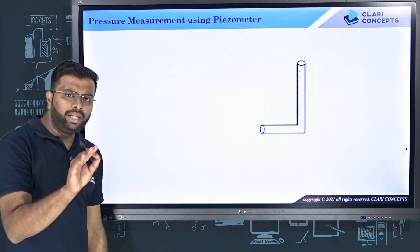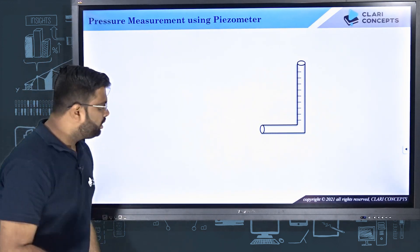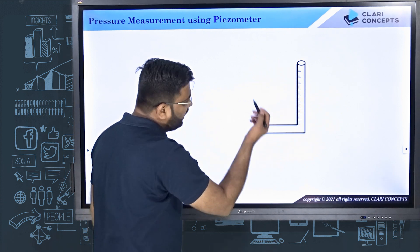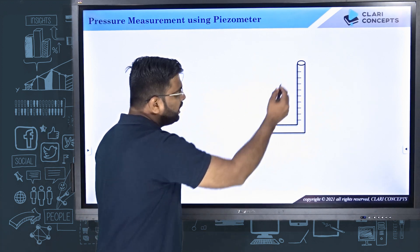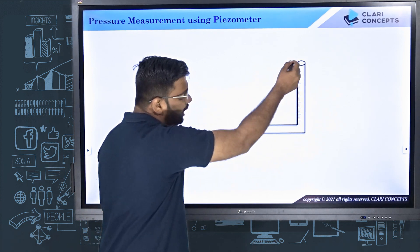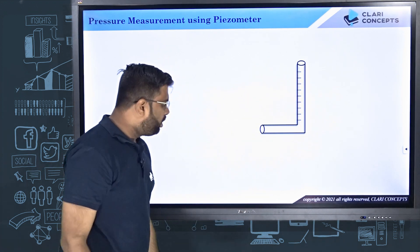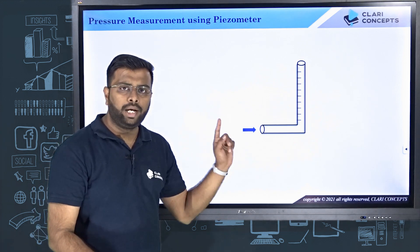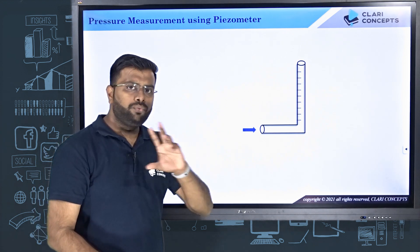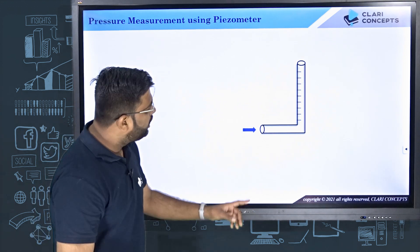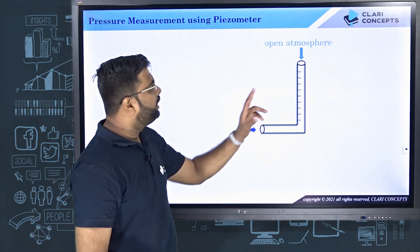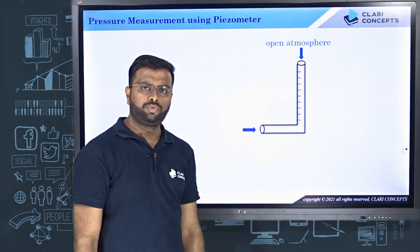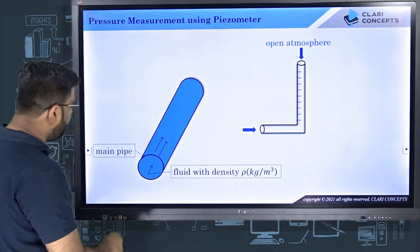A piezometer is simply a glass tube or any tube in a bent shape which has two open ends. One end is connected to the pipe where the fluid pressure is to be measured, and the other end of the tube is kept open to the atmosphere.